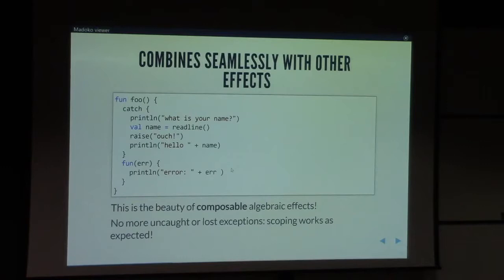And, nicely enough, because it's, as I said, algebraic effects compose. My earlier exception effect works really just like that. There's nothing strange going on. So we can write a catch handler across things that are asynchronous, and then maybe raise an exception, and will be caught by this catch. The lexical scoping is preserved. That's the beauty of composable algebraic effects.